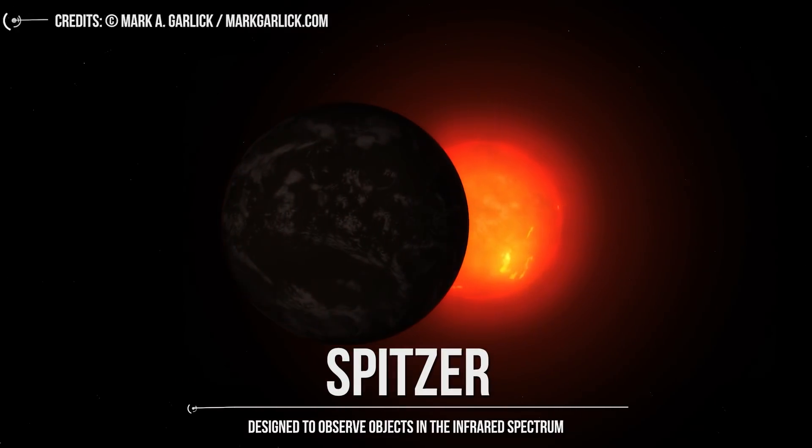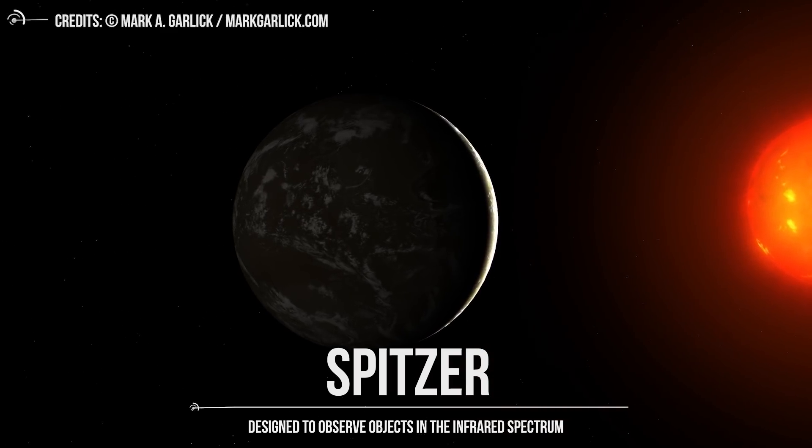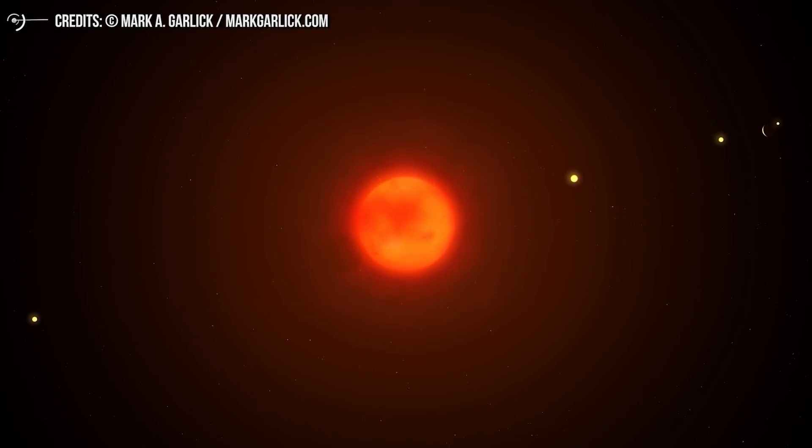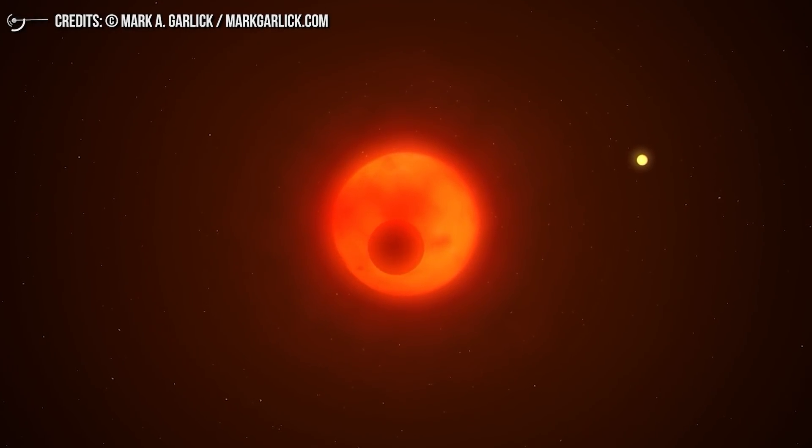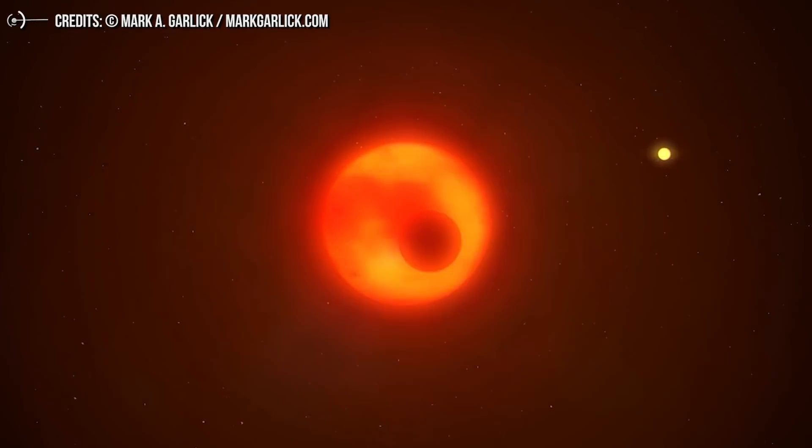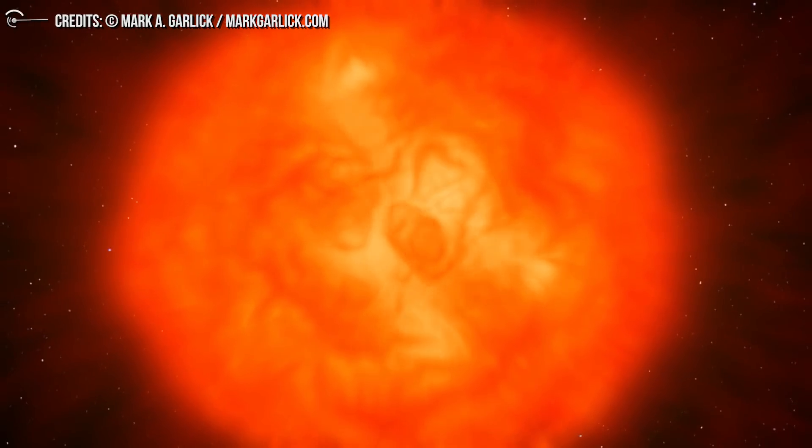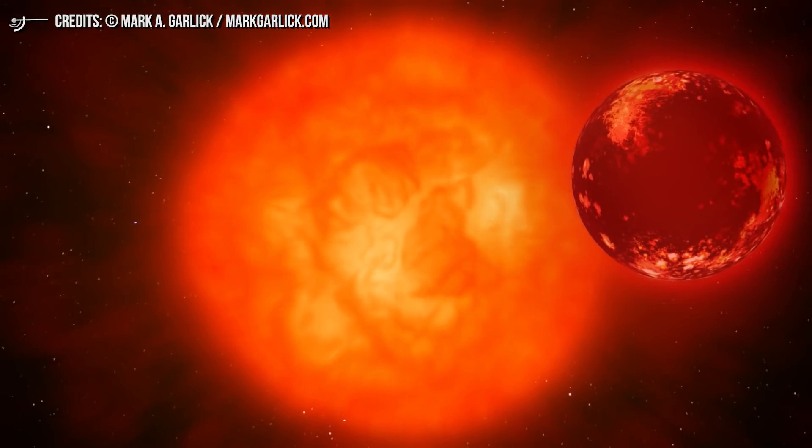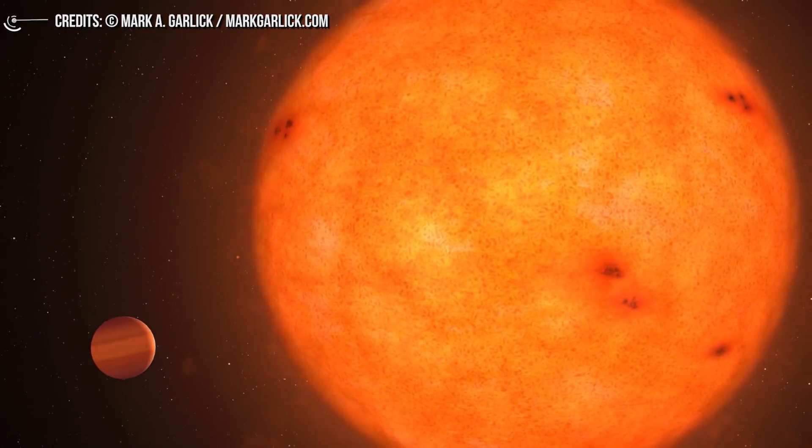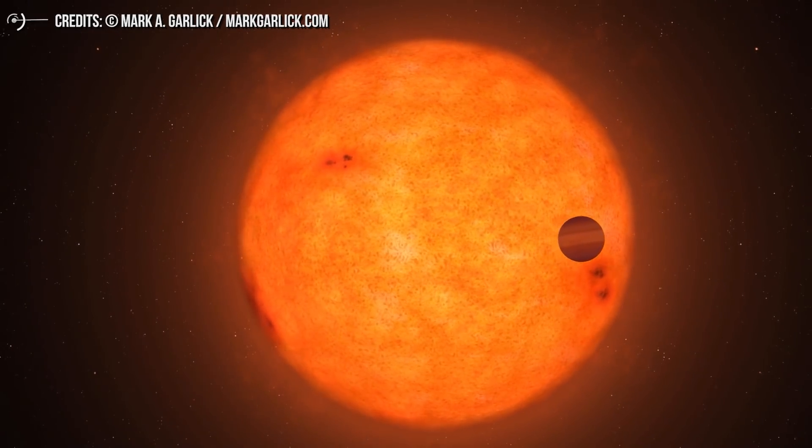SPITZER. Designed to observe objects in the infrared spectrum, SPITZER has proven to be a revolutionary tool in the characterization of exoplanets. The mission is the first instrument to directly detect light from an exoplanet, and its data has revealed the composition, temperature, and even likely wind patterns on faraway exoplanets. SPITZER marked a new age in planetary science by being the first telescope to directly detect light of planets outside of our solar system, essentially allowing them to be directly studied and compared.